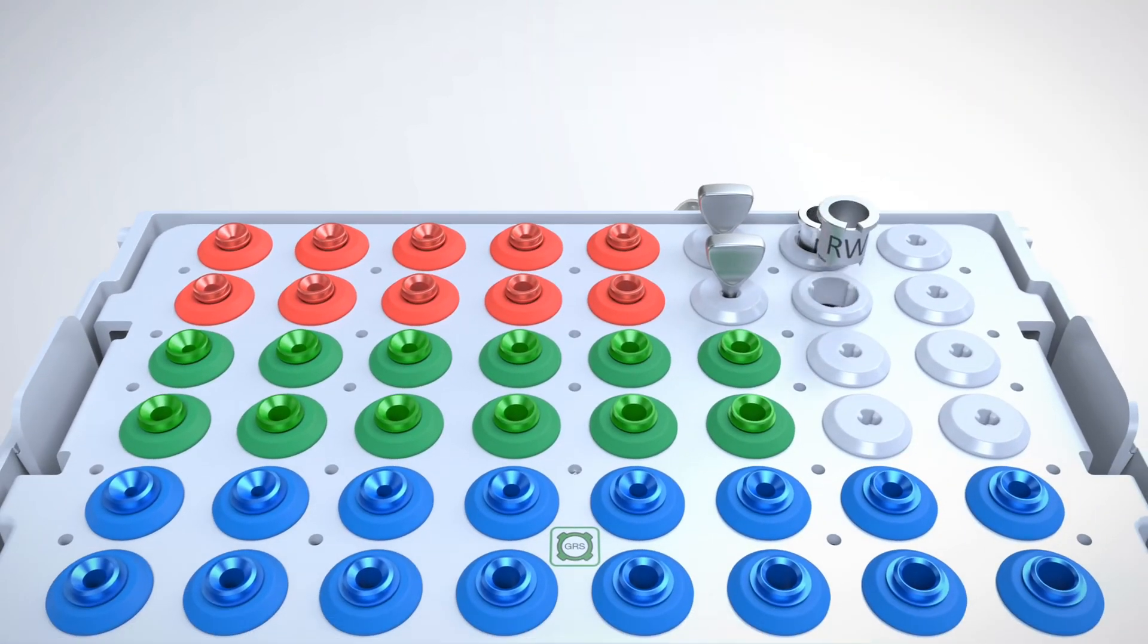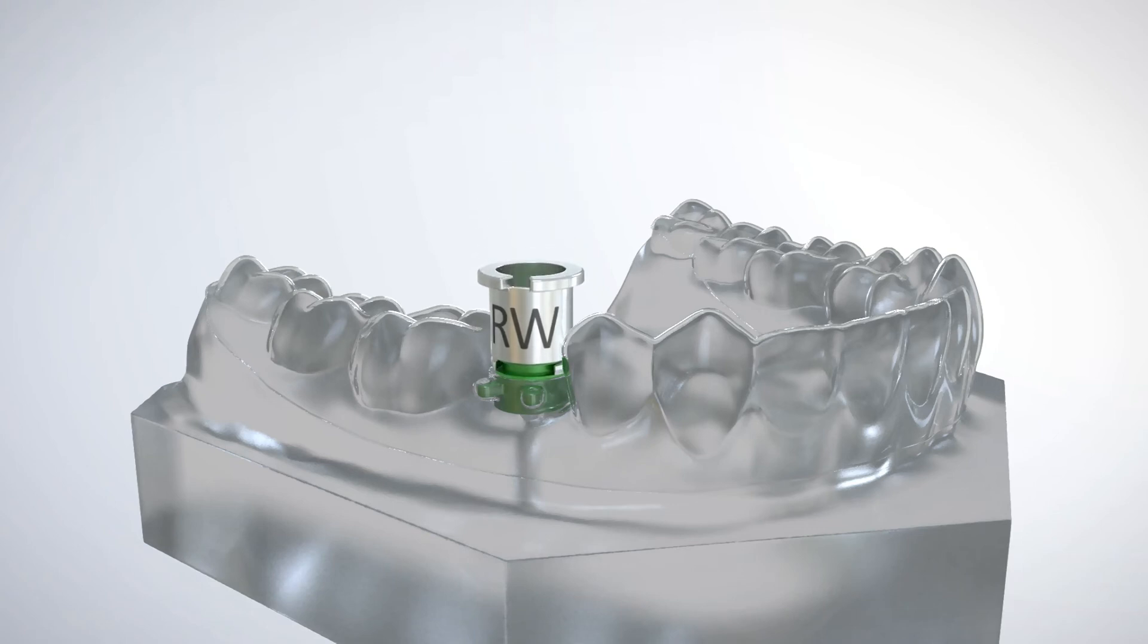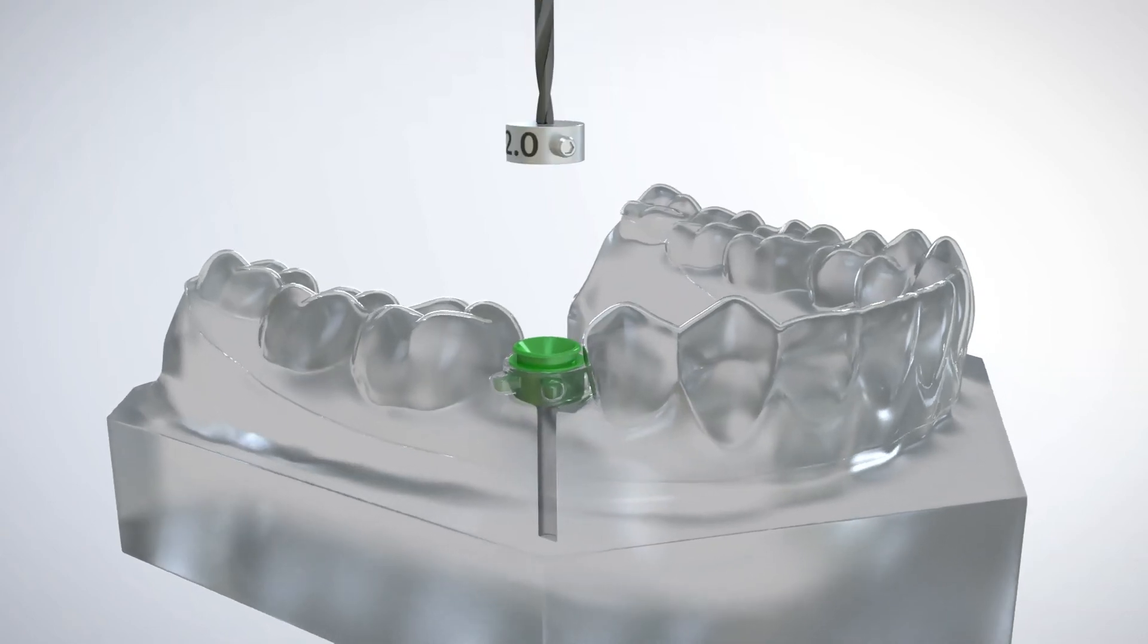A GRS drill sleeve is removed from the cassette using the GRS IR tool. The drill sleeve is then snapped into the surgical guide and the IR tool simply separates from the drill sleeve using a sliding motion.